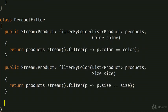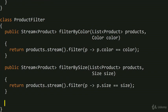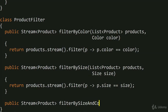But the boss comes back again and now wants to allow users to filter by both color and size at the same time. So once again we jump into ProductFilter and implement yet another method — filterBySizeAndColor — which takes a list of products, a size, and a color.